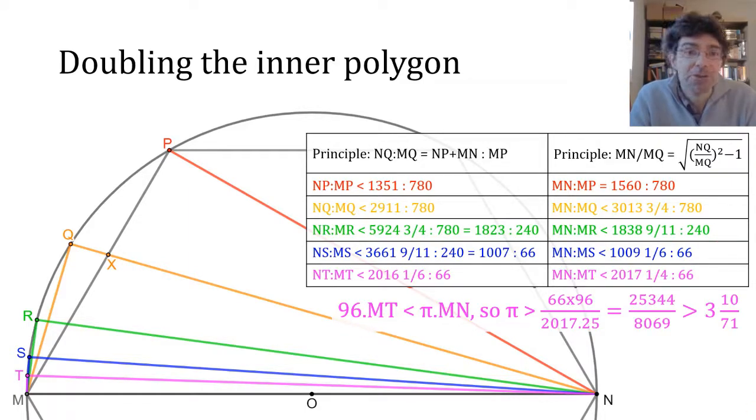Archimedes used this to produce an approximation of pi that was world leading and better than anyone needed at the time for any practical purpose. I think the thing that we discussed first is also interesting, seeing Archimedes using those rational approximations for root 3, which still crop up in situations like solving the so-called Pell equation, x squared minus 3y squared equals 1.